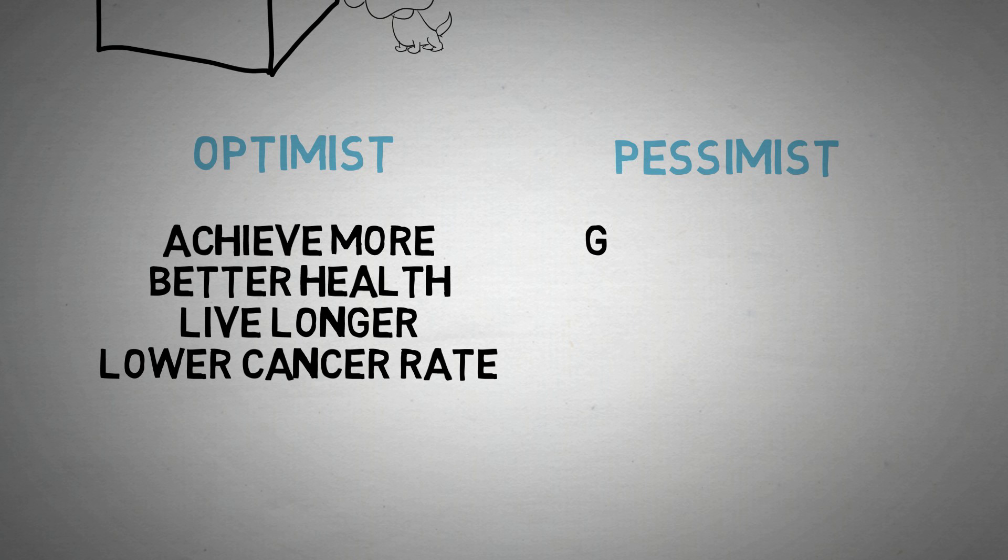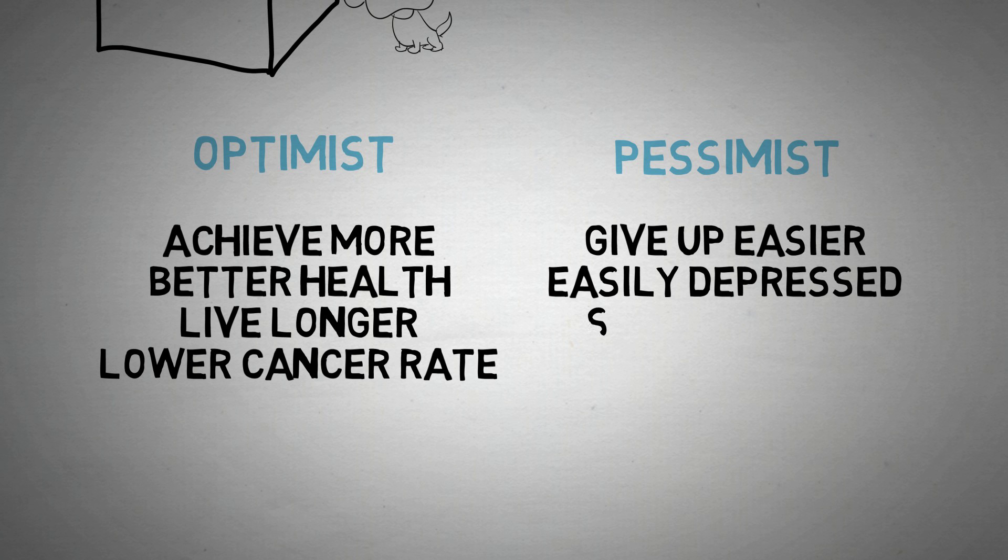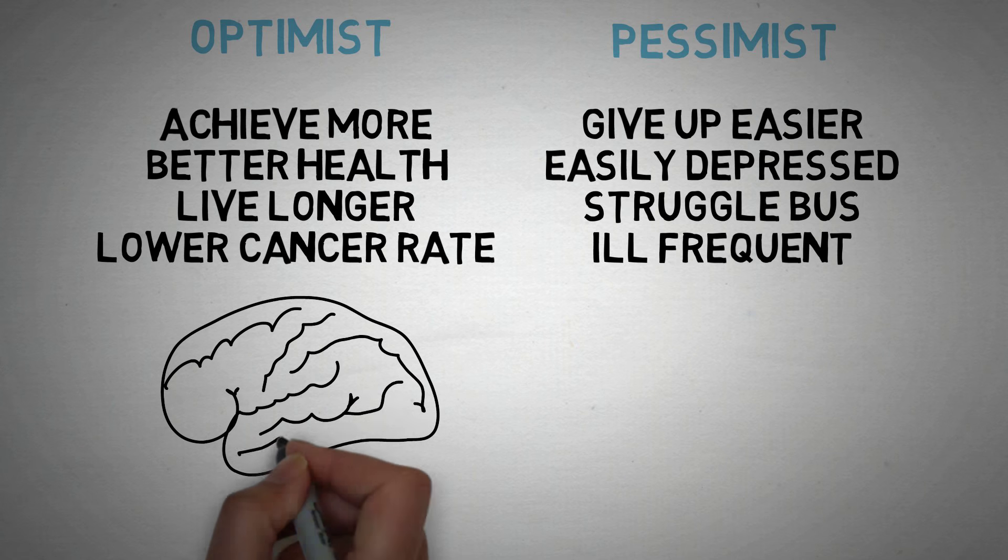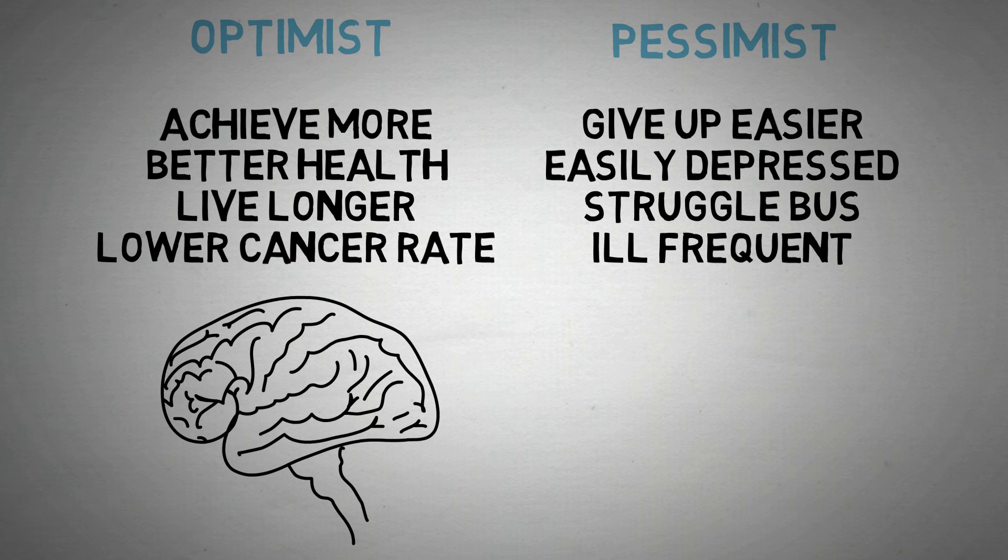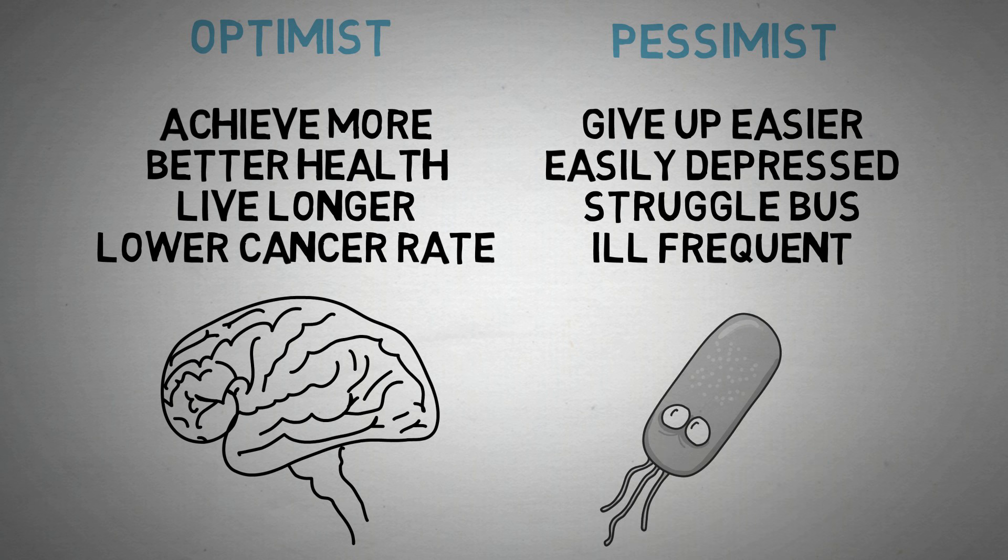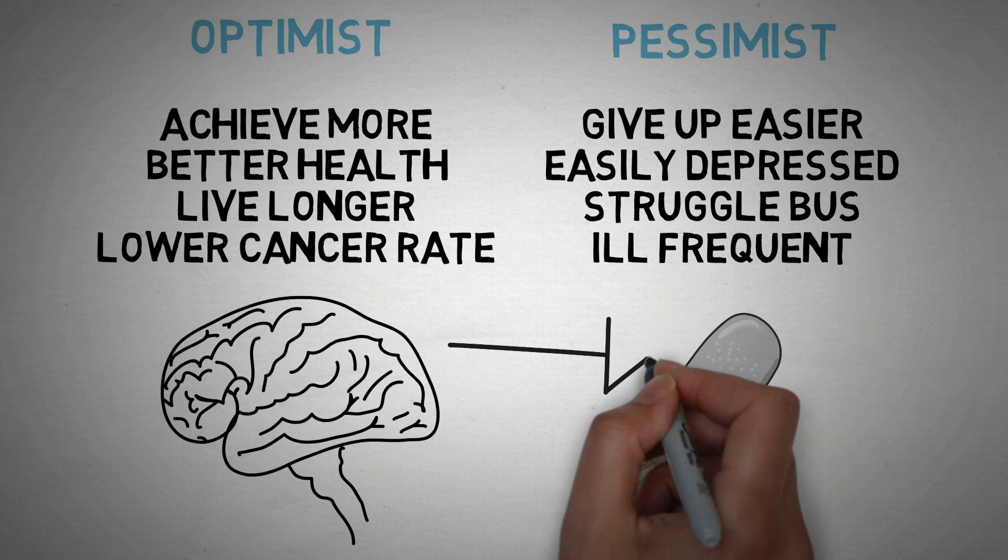Pessimists, on the other hand, give up more frequently, are more prone to depression, and have a mindset that they hate life. In fact, pessimists are more likely to get ill after a bad event, because there are hormones that connect the mindset of the person to their immune system. And a negative mindset can cause a negative immune system.